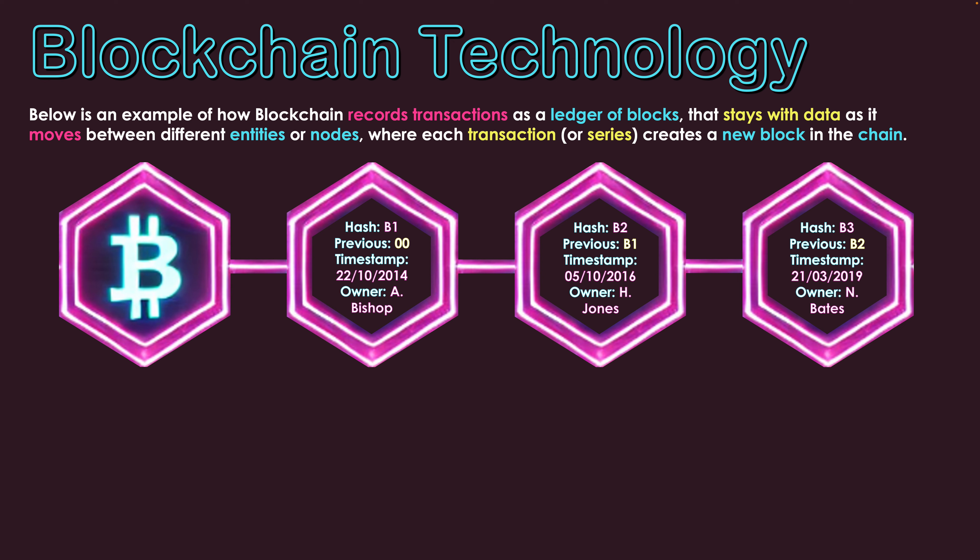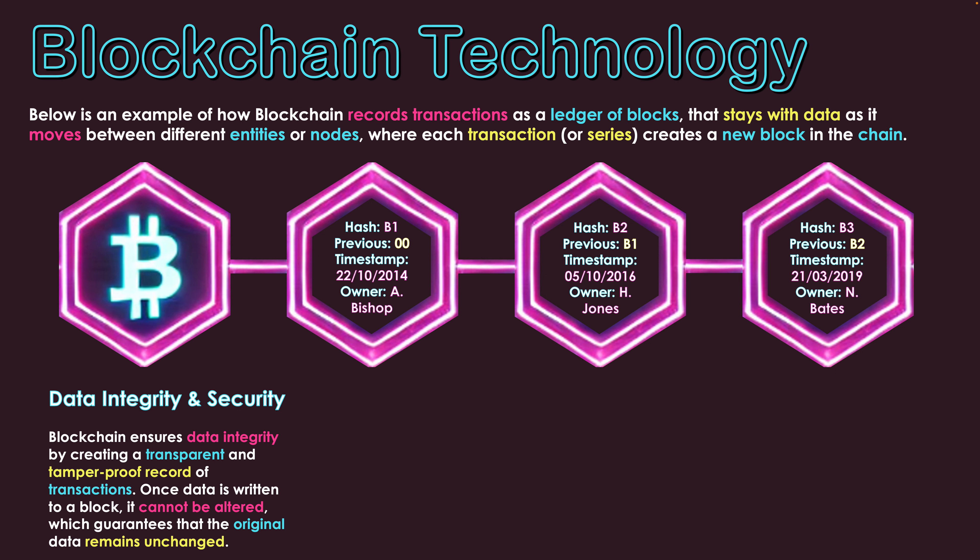The timestamp is the 5th of the 10th 2016, and the owner is now H. Jones — registered in the blockchain. H. Jones eventually sells to N. Bates, so a new block is created: hash B3, with the previous hash B2 referencing the previous block. Timestamp is the 21st of the 3rd 2019, owner N. Bates, recorded in the blockchain. We have created new blocks every time this Bitcoin changed hands, stating the hash, the previous block, and timestamping each transaction.